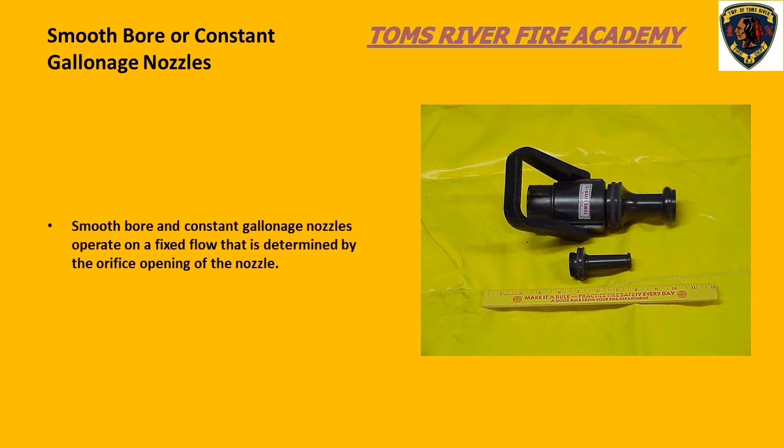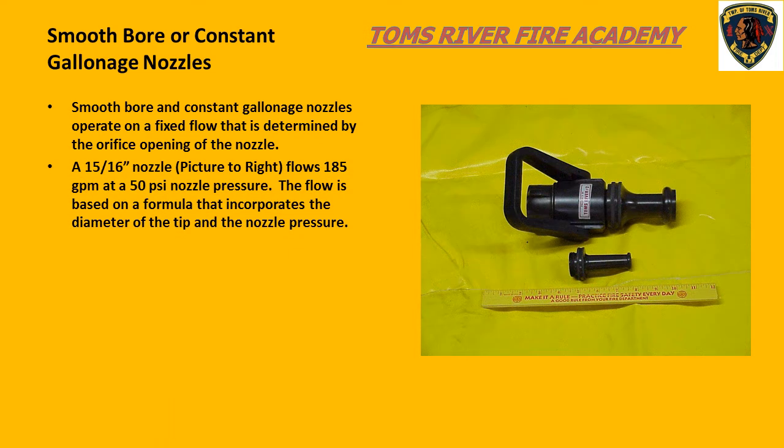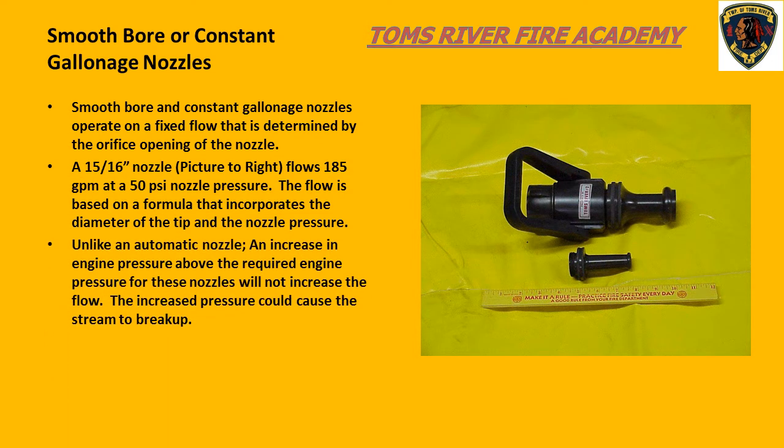Smoothbore or fixed-gallonage nozzles work on a fixed flow determined by the tip size or orifice opening of the nozzle. The 15/16-inch nozzle flows 185 gallons a minute with a nozzle pressure of 50 psi. The flow is based on a mathematical formula using the tip diameter and the nozzle pressure. Unlike an automatic nozzle, an increase in engine pressure above the required engine pressure will not increase the flow — it will more than likely disrupt the shape of the stream and cause it to break up.